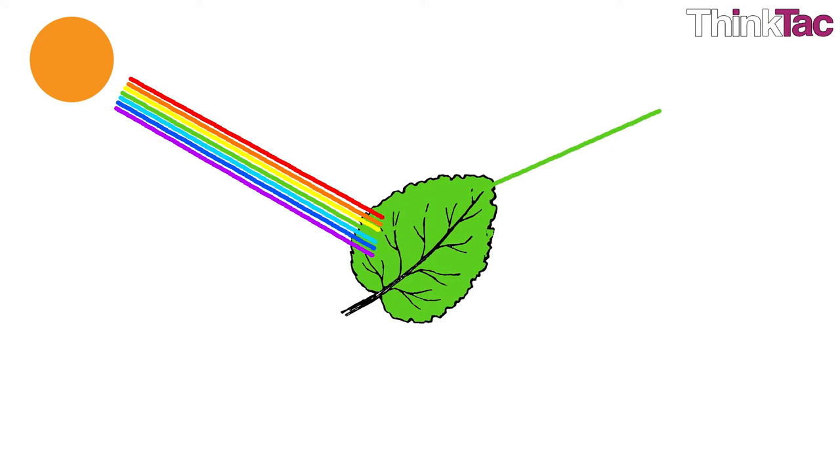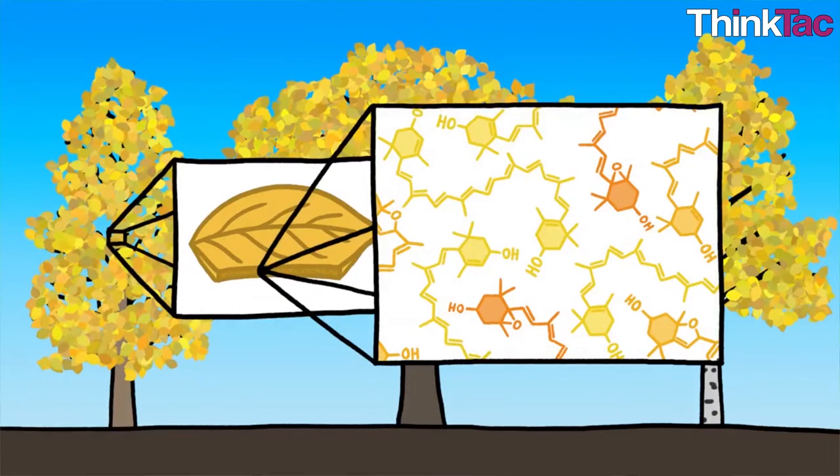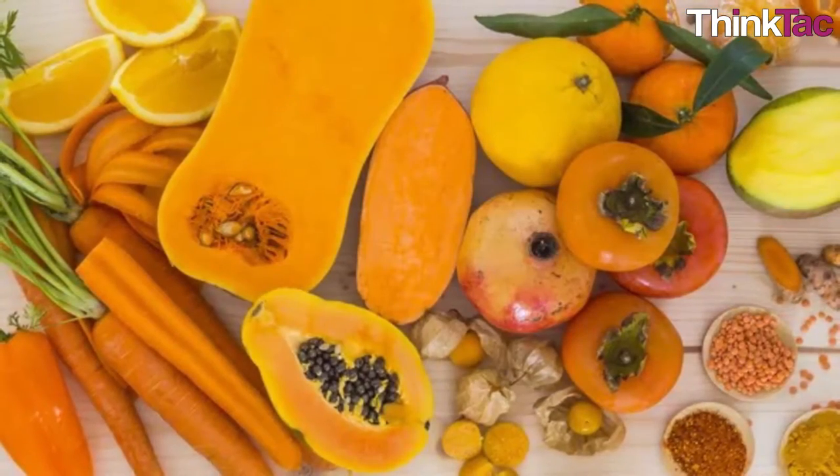It is also important to note that chloroplasts also contain carotenoids. They absorb light most strongly in the blue part of the spectrum. Carotenoids are mostly found in fruits and flowers.